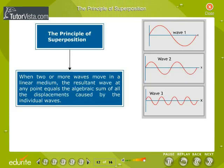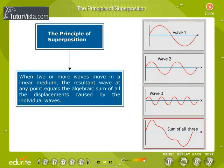The principle of superposition states that when two or more waves move in a linear medium, the resultant wave at any point equals the algebraic sum of all the displacements caused by the individual waves.